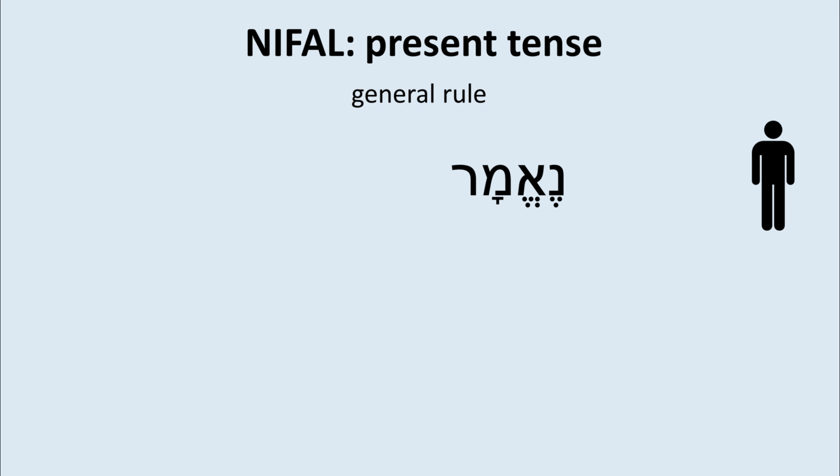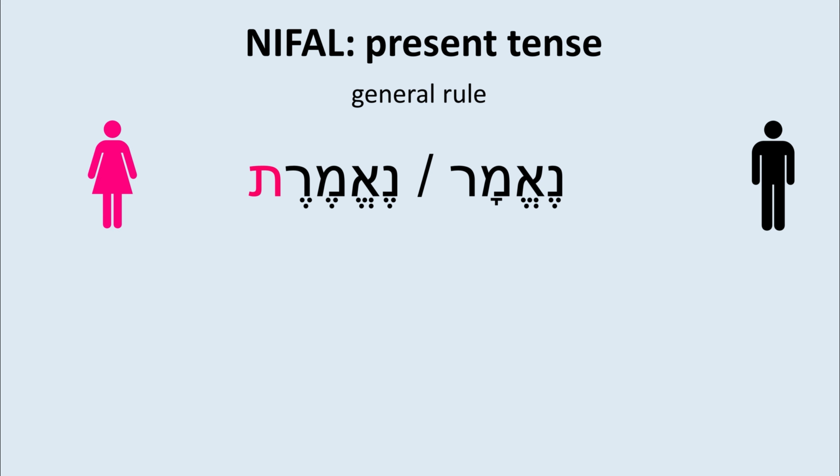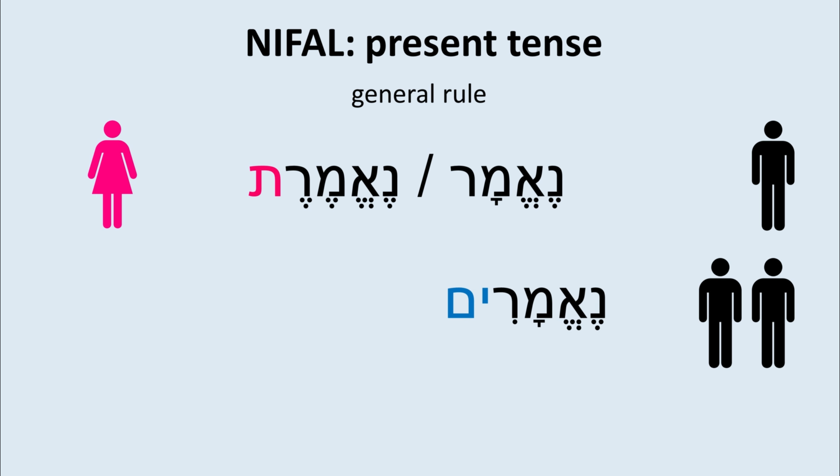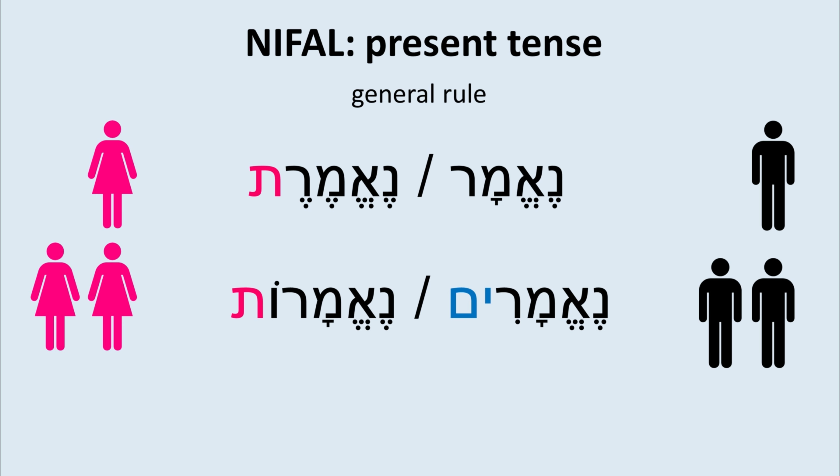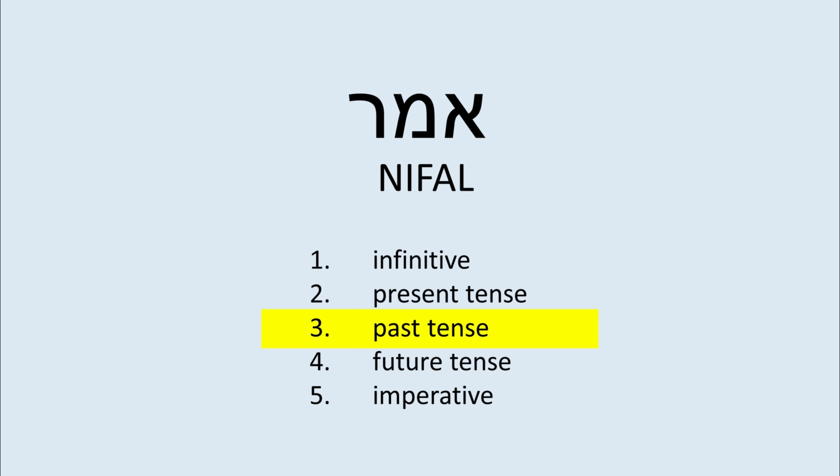From here we derive the other persons. Ne-emar is him, and now we go to he ne-emar. We have already finished chapter two.